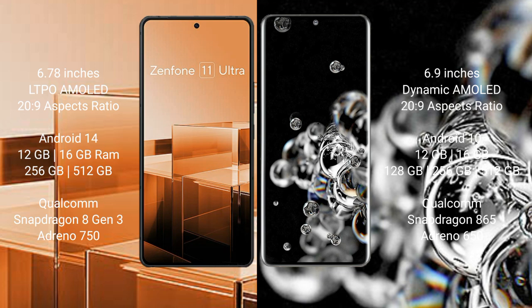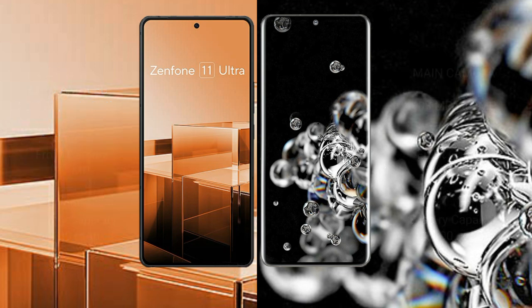The Samsung Galaxy S20 Ultra comes with 12GB or 16GB RAM and 128GB, 256GB, or 512GB internal storage, with a Qualcomm Snapdragon 865 processor and GPU Adreno 650.